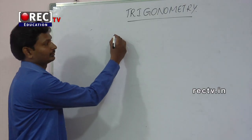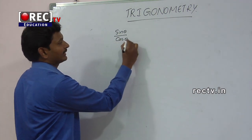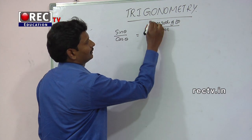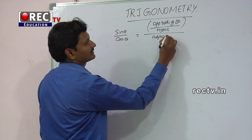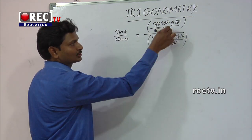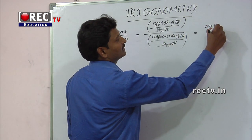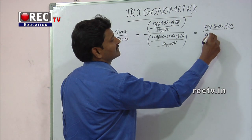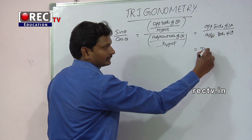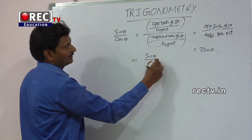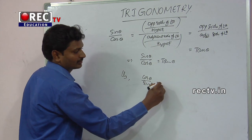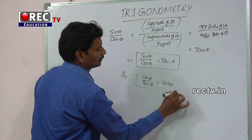Consider the ratio sin theta divided by cos theta. Sin theta is opposite side divided by hypotenuse, and cos theta is adjacent side divided by hypotenuse. Cancelling the hypotenuse terms gives opposite side divided by adjacent side — which is nothing but tan theta. So sin theta divided by cos theta equals tan theta. Similarly, cos theta divided by sin theta equals cot theta. These two are important results.